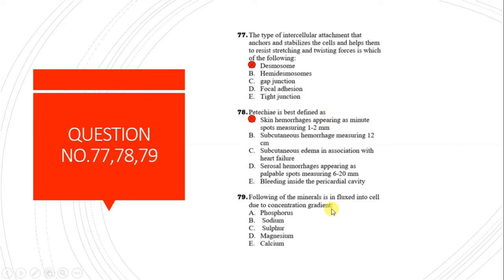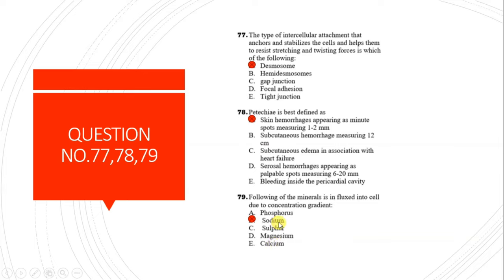Question 79: Which mineral is influxed into the cell due to concentration gradient? The answer is sodium ions. Some minerals are in high concentration outside the cell while others are in high concentration inside. By diffusion, minerals move from high to low concentration gradient. Phosphorus, sulfur, and magnesium are in high concentration inside the cell. Calcium is outside, but sodium has a higher extracellular concentration gradient than calcium, so sodium moves more into the cell.